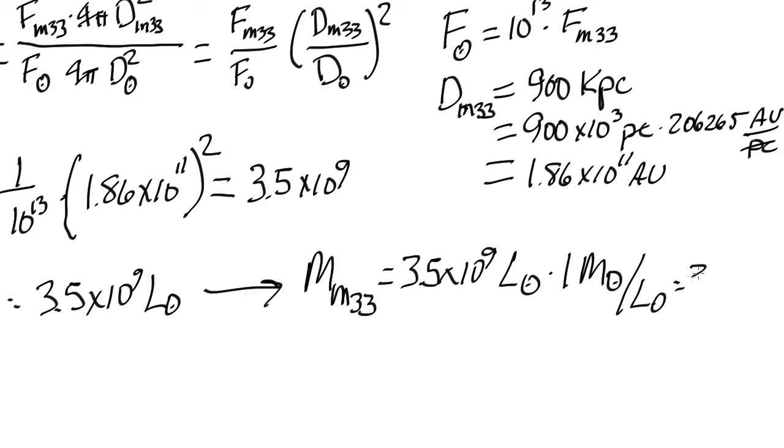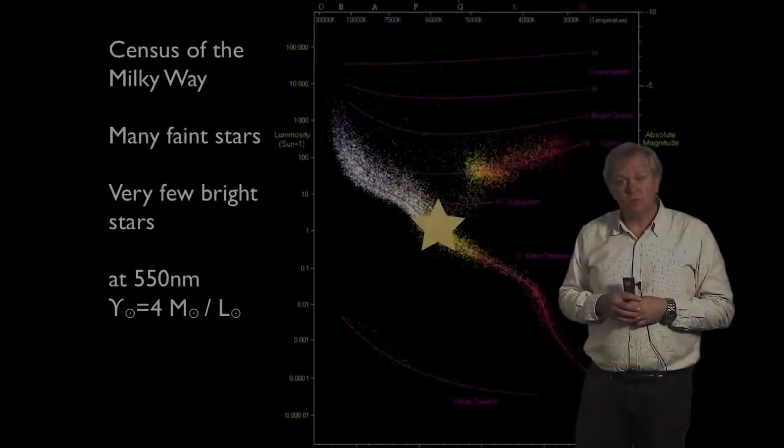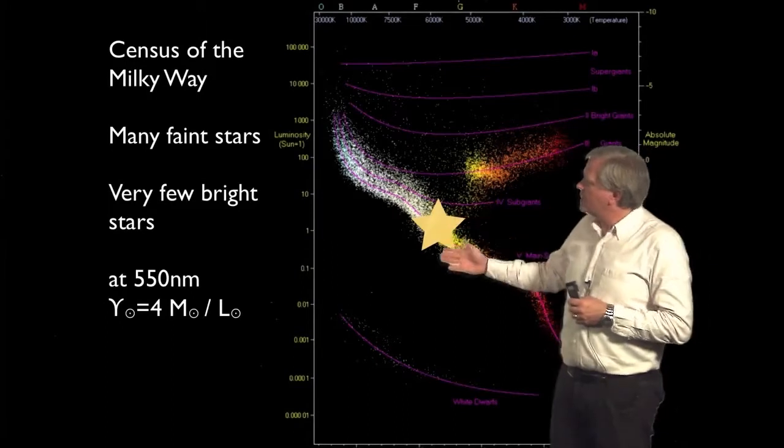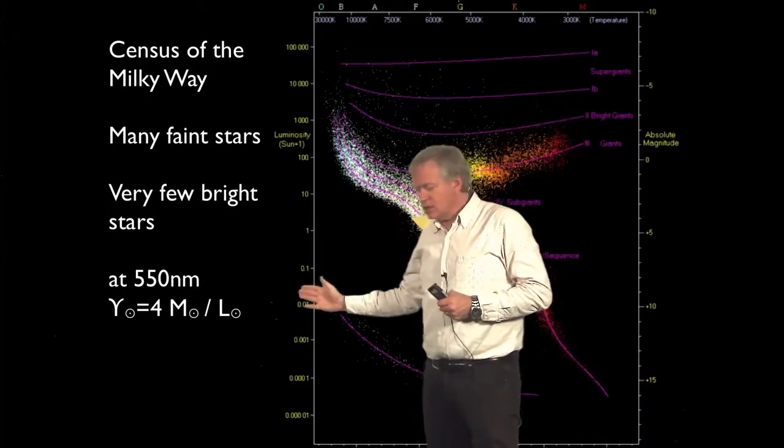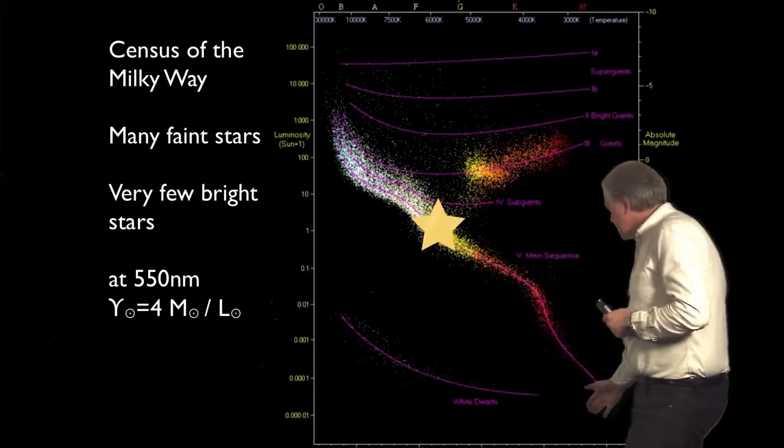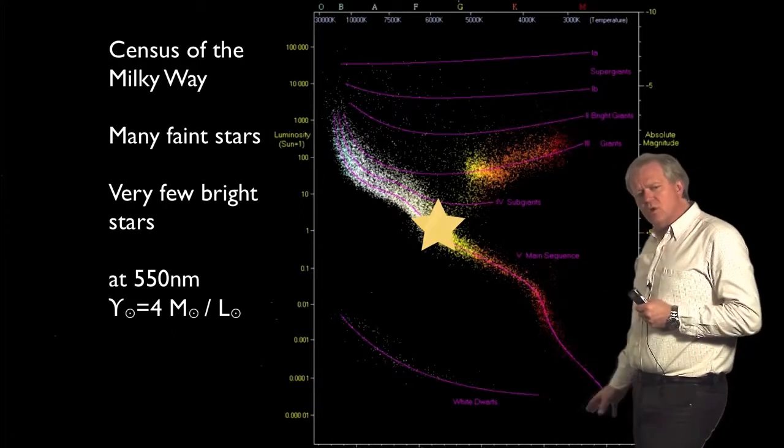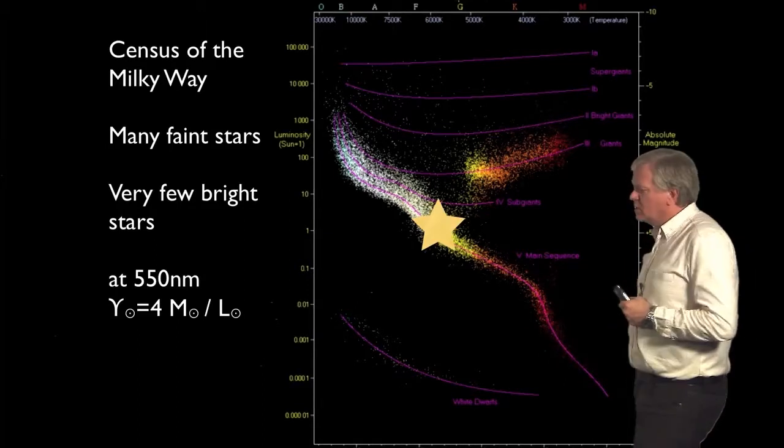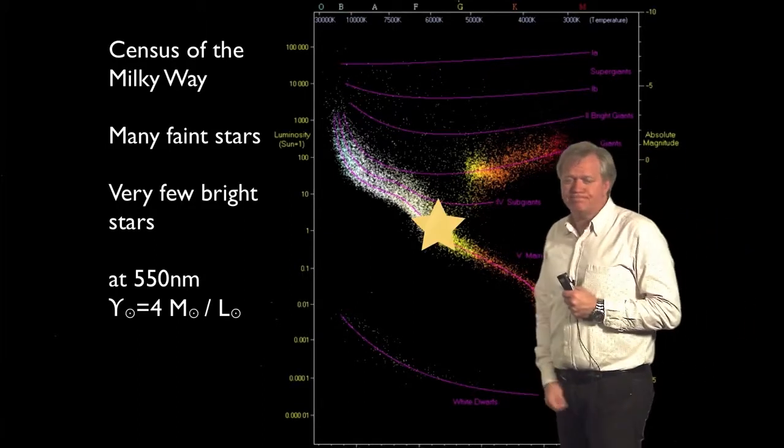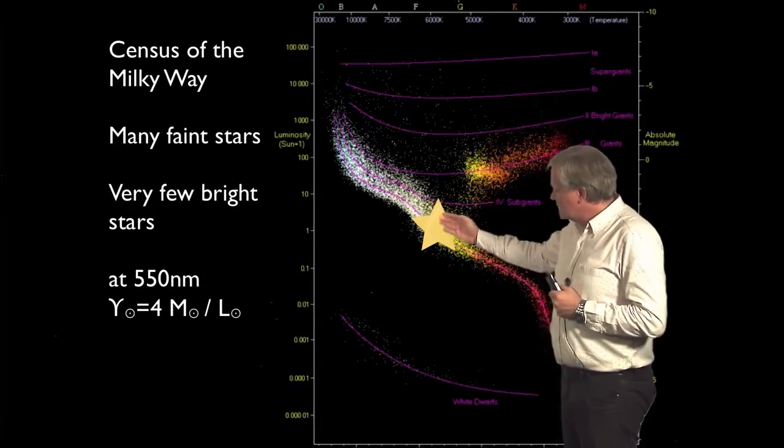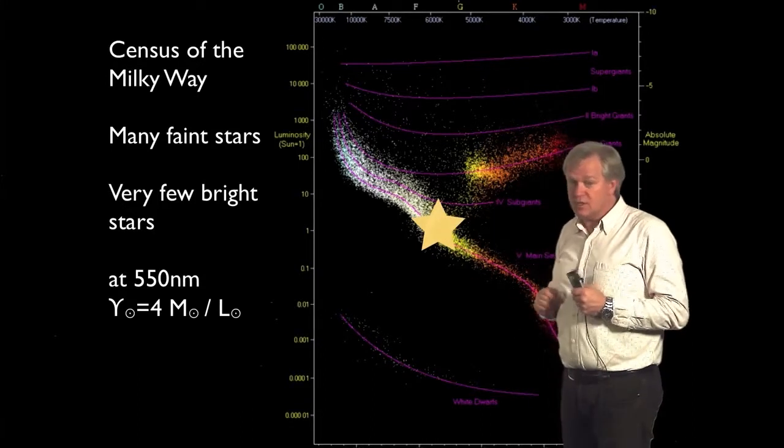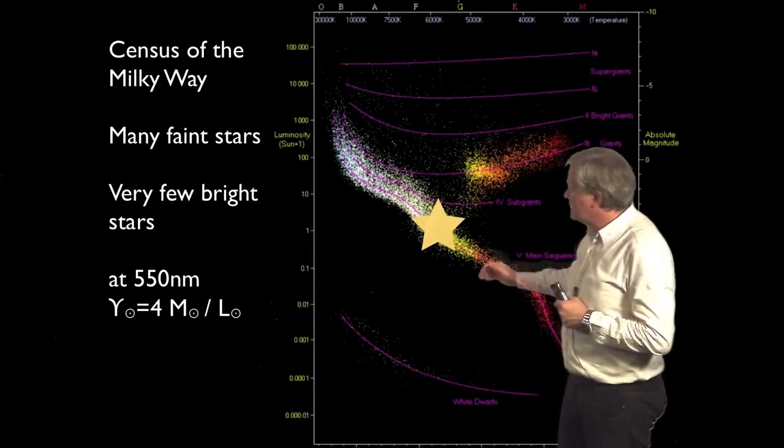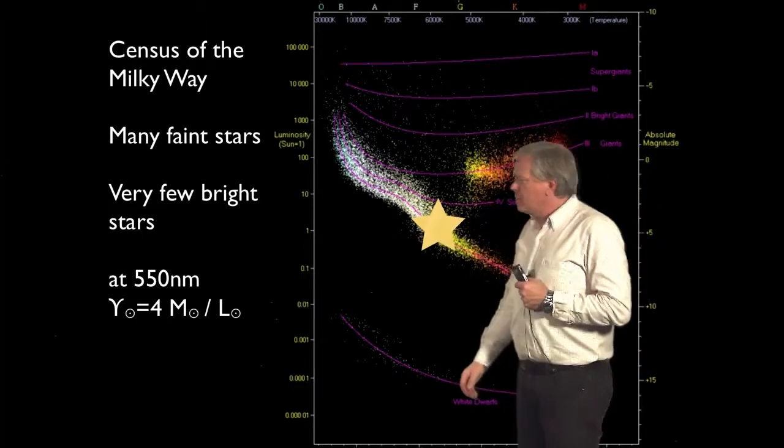What do we see when we look at our own Milky Way? This diagram plots how bright stars are versus their temperature. And it turns out you can also, with this, measure the mass of a star. This is known as a Hertzsprung-Russell diagram. You can see our sun has a temperature of about 5,800 degrees, weighs 1 solar mass, and is 1 solar luminosity. But of course, there are stars here that turn out to be much brighter than our sun.